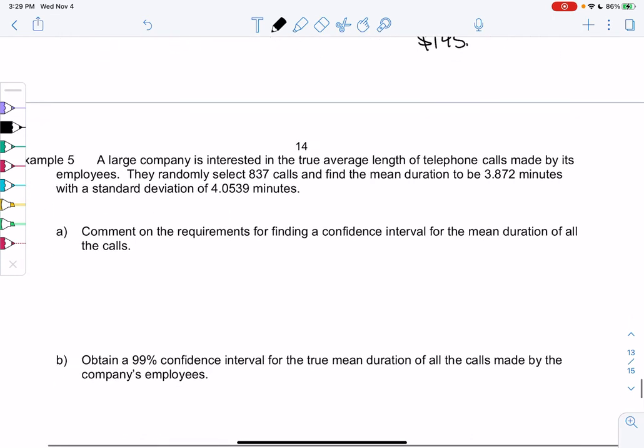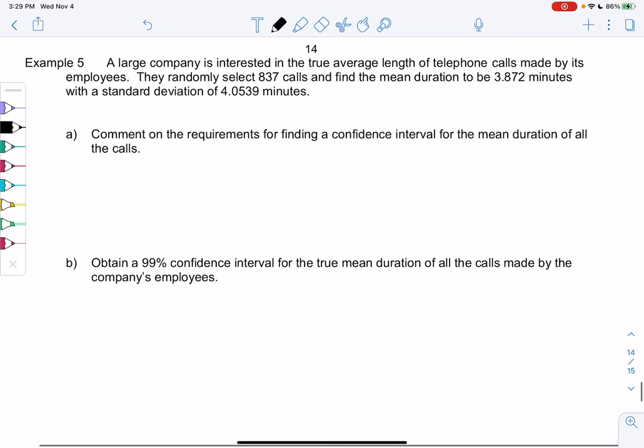Let's try one more, Example 5. A large company is interested in the average length of telephone calls made by its employees. They randomly sample 837 calls, so we have a nice big sample, n equals 837. They find that the mean duration of a phone call, or x̄, is 3.872 minutes, and they have a standard deviation of 4.0539 minutes.